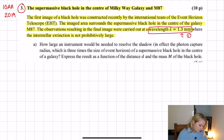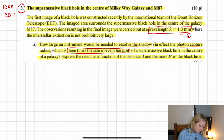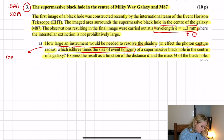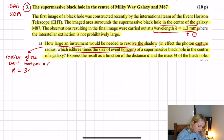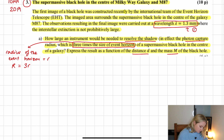Part A asks: how large an instrument would be needed to resolve the shadow — in effect the photon capture radius, which is three times the size of the event horizon — of a supermassive black hole? Express the result as a function of the distance d and the mass M of the black hole. So if the radius of the event horizon is r, then the full radius we want to resolve is 3r, and we want to express the answer in terms of d and M.